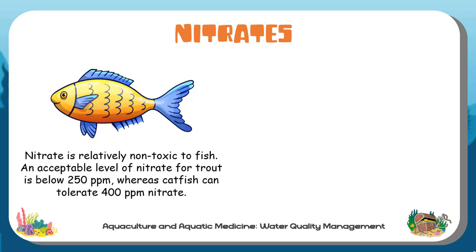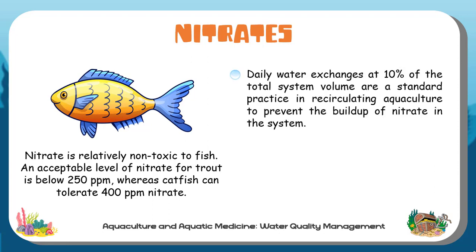Nitrate is relatively non-toxic to fish. An acceptable level of nitrate for trout is below 250 ppm, whereas catfish can tolerate 400 ppm nitrate. Daily water exchanges at 10% of the total system volume are standard practice in recirculating aquaculture to prevent the buildup of nitrate in the system.